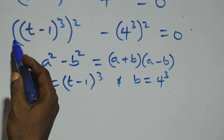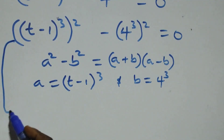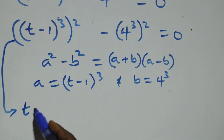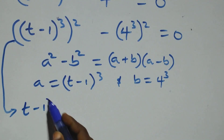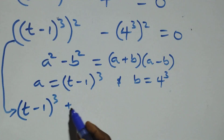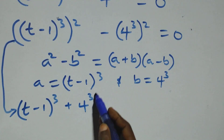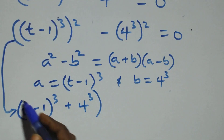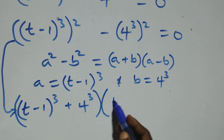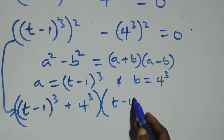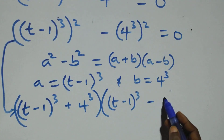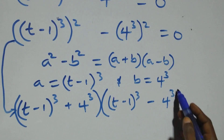That is all we have here. Following this, it becomes: [(t − 1)³ + 4³] times [(t − 1)³ − 4³] equals 0.